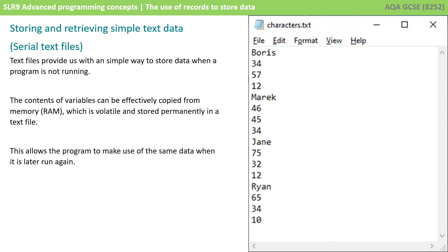We've seen from examples in previous videos that text files provide us with a simple way to store data when a program is not running. The contents of variables can effectively be copied from RAM, which is where variables are stored when a program is running but is volatile, and then can be stored permanently in a text file to secondary storage. This allows the program to make use of the same data when it's later run again.